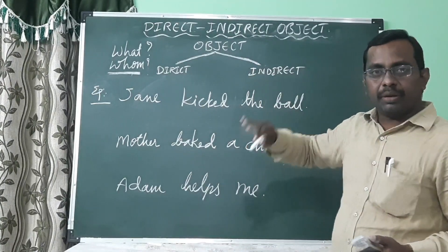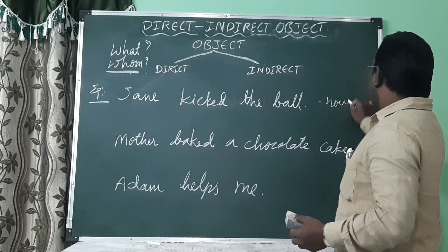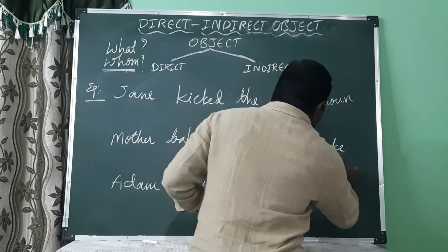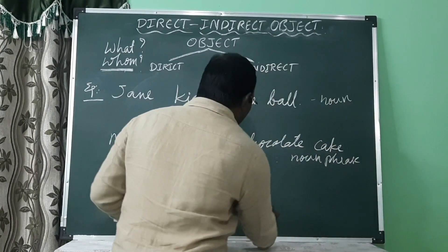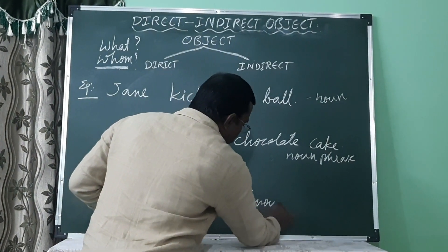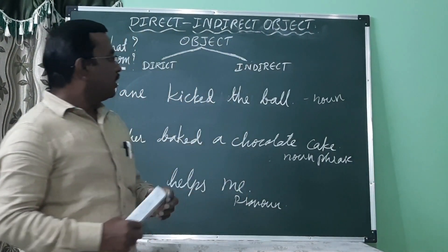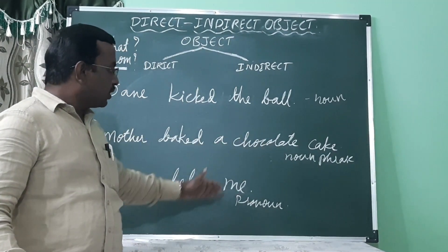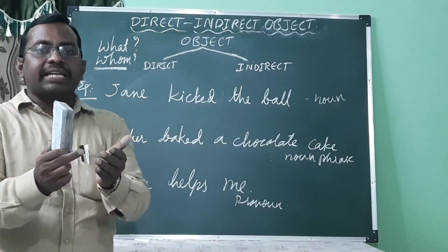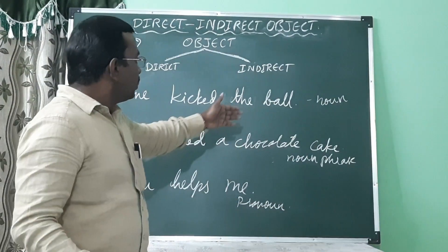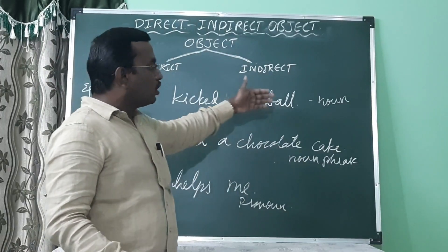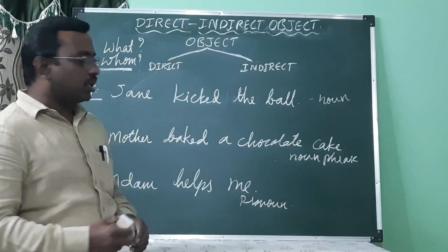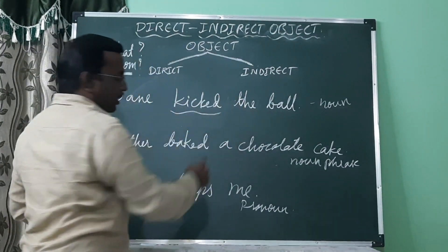The direct object may be a noun, a noun phrase, or a pronoun. A group of words that acts as a noun is called a noun phrase. So the direct object may be a noun, a noun phrase, or a pronoun.